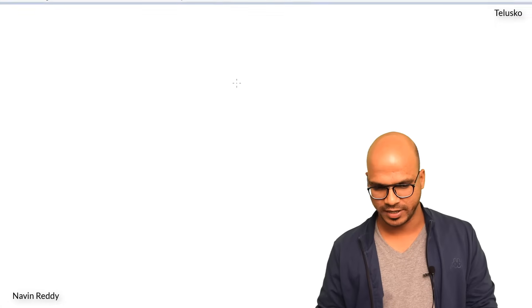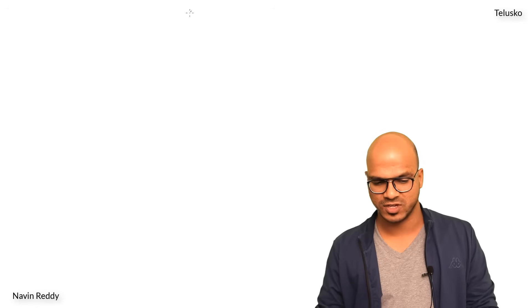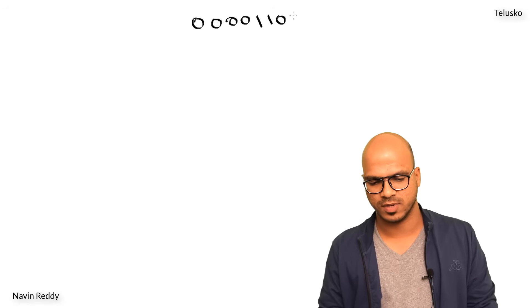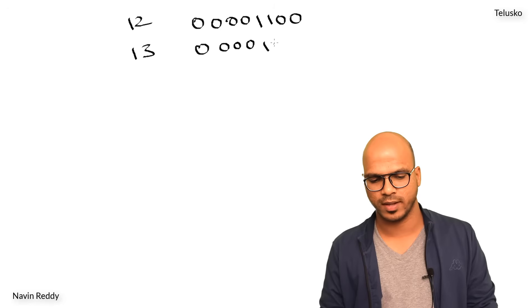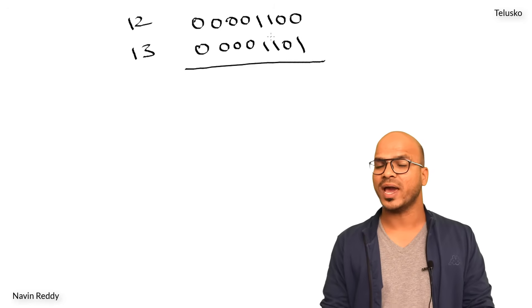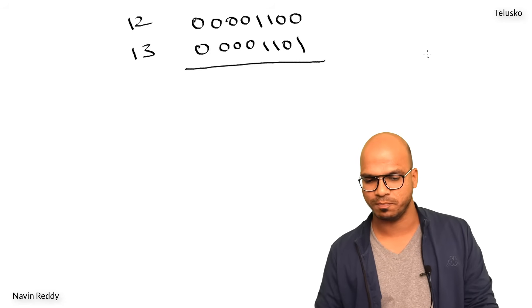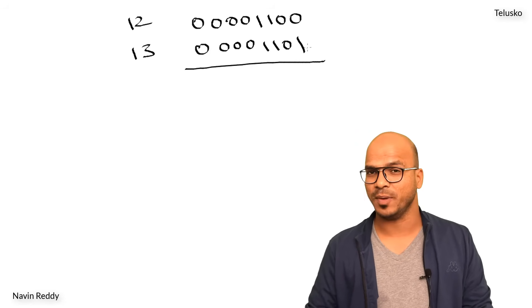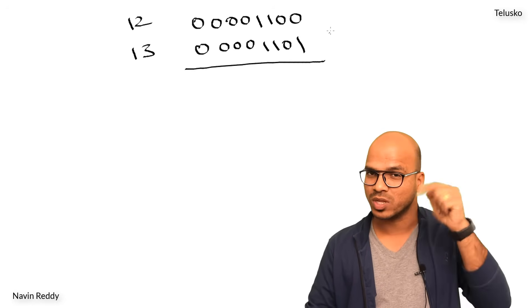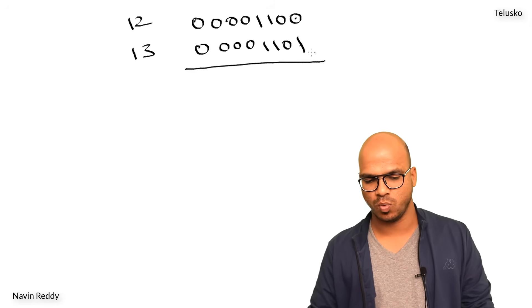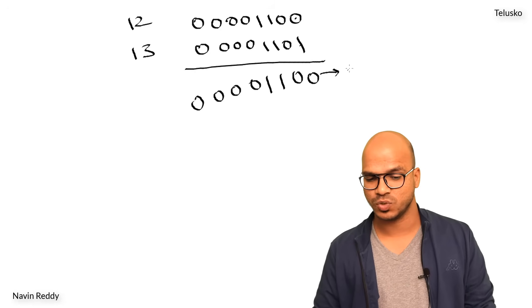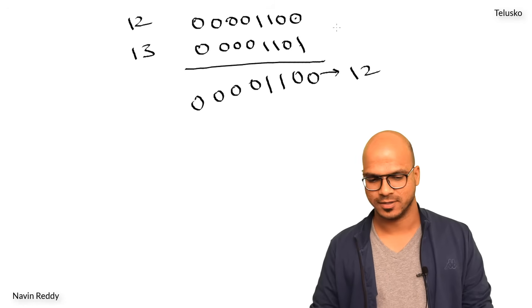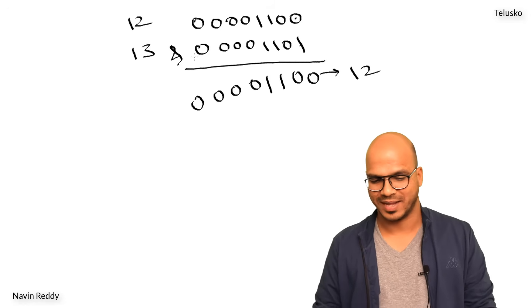Let's go to Paint. We convert 12 into binary: 0 0 0 0 1 1 0 0. Then 13's binary format is 0 0 0 0 1 1 0 1. Now we compare bit by bit. For AND, both must be 1 to give 1. So: 0 and 0 is 0, 1 and 1 is 1, 1 and 0 is 0, all remaining zeros stay 0. The output is 0 0 0 0 1 1 0 0, which is 12. So that's why we got 12 for bitwise AND.